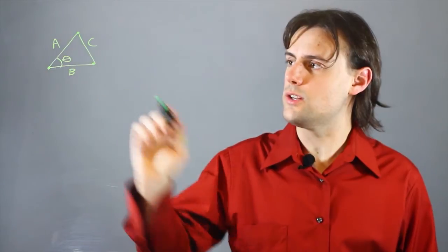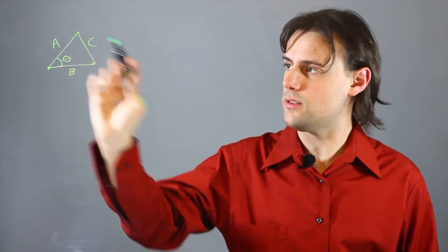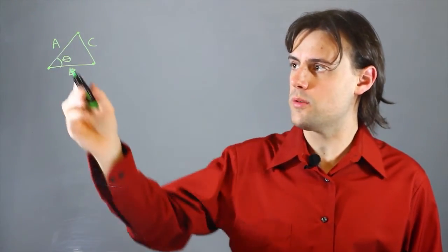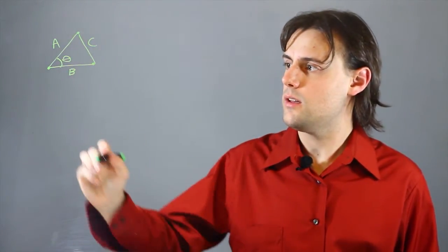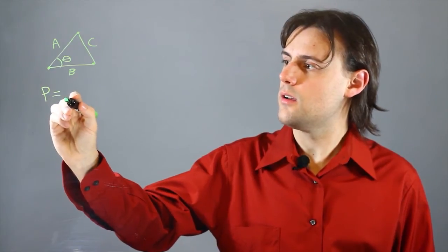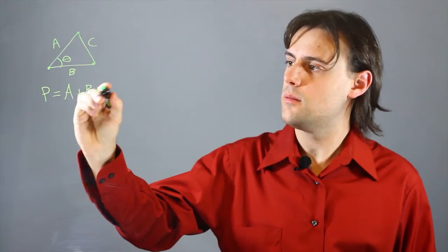we have a triangle where theta remains unchanged and the perimeter of this triangle formed by these variables and this given angle theta is simply the perimeter. So the perimeter then would simply be A plus B plus C.